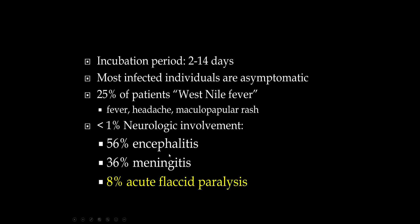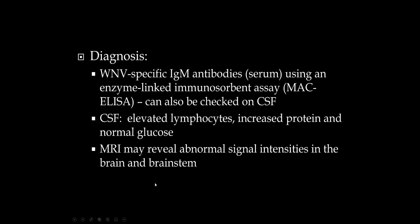Encephalitis means there's actual involvement of the brain parenchyma, not just the coverings of the brain. In encephalitis, patients may have focal findings, aphasia, hemiplegia, or a seizure due to irritation of cortical neurons. Overall, about 8% of patients with neurologic involvement will develop this acute flaccid paralysis from anterior horn cell involvement.